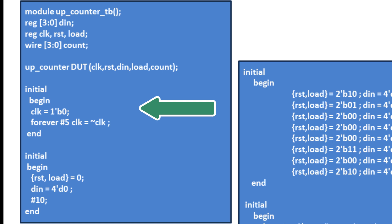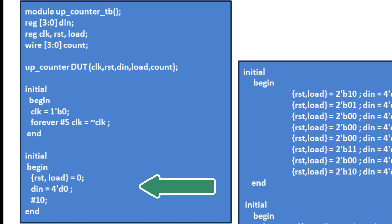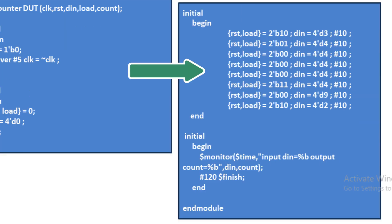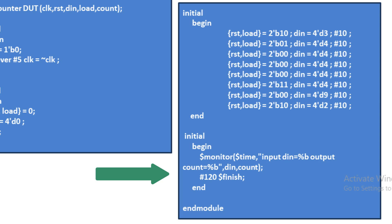Using forever with a delay of 5, clock equals negation of clock — this generates a clock signal. In the second initial block, we initialize reset, load, and d_in with zero. In the third initial block, we give different sets of inputs: reset, load, and d_in with various values to check what output we get when reset is high, when load is high, and when both are low. In the last initial block we use the $monitor command, and after 120 nanoseconds we give the $finish command to end the simulation.